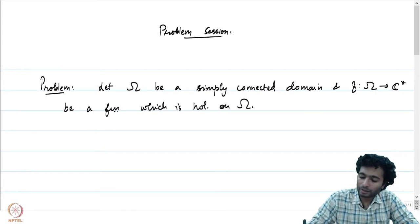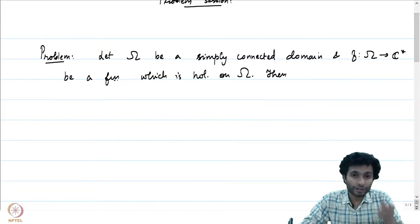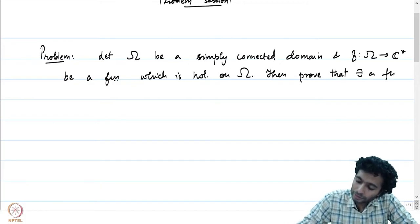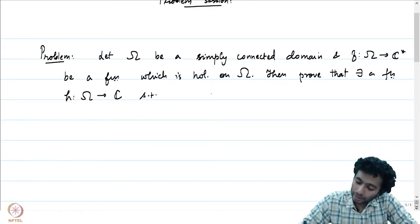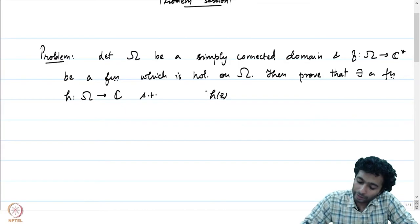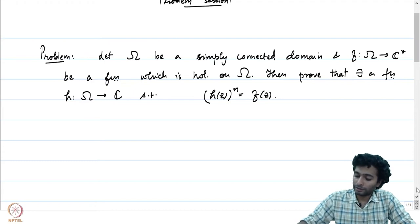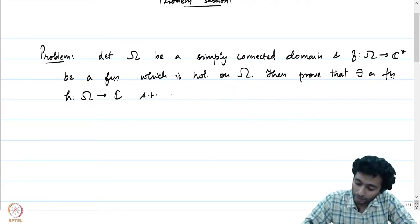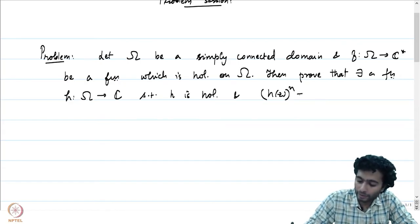Notice that f does not vanish — that is what it means for f to map into C*. Then we want to show that there exists a function h from omega to C* such that h is holomorphic and h(z)^n = f(z).